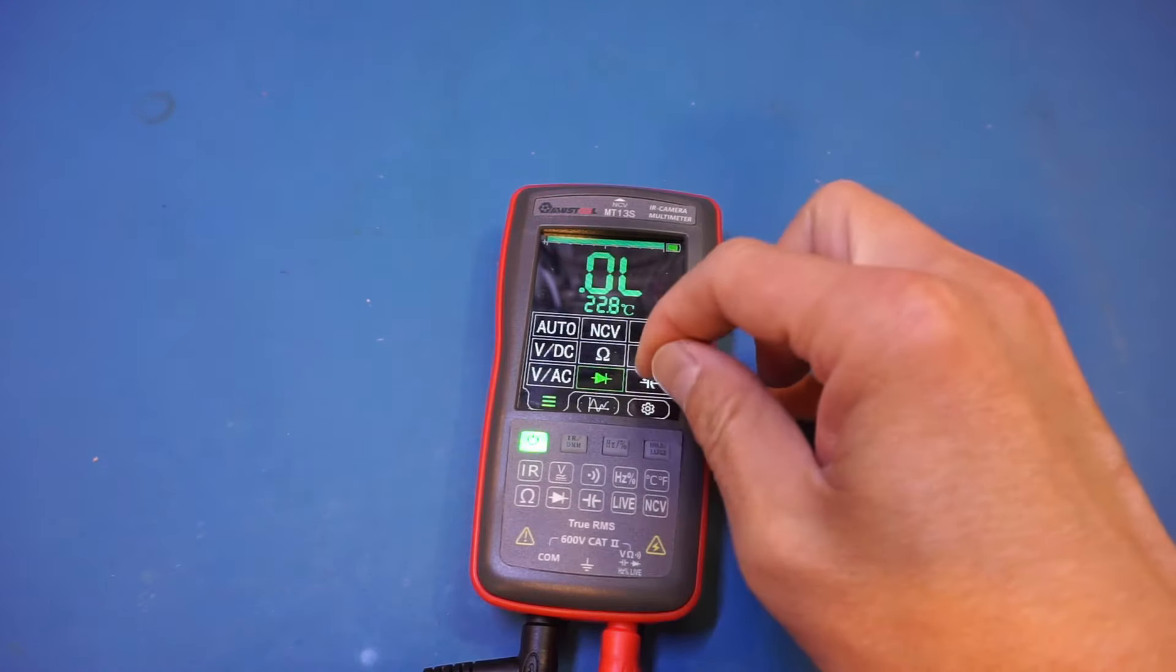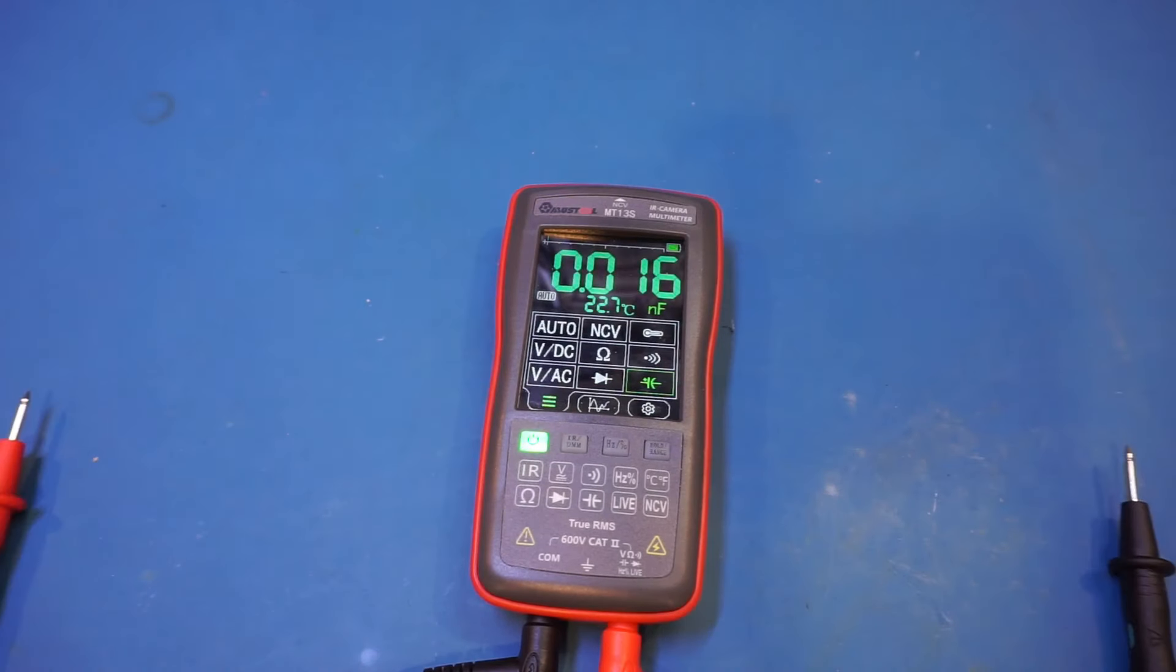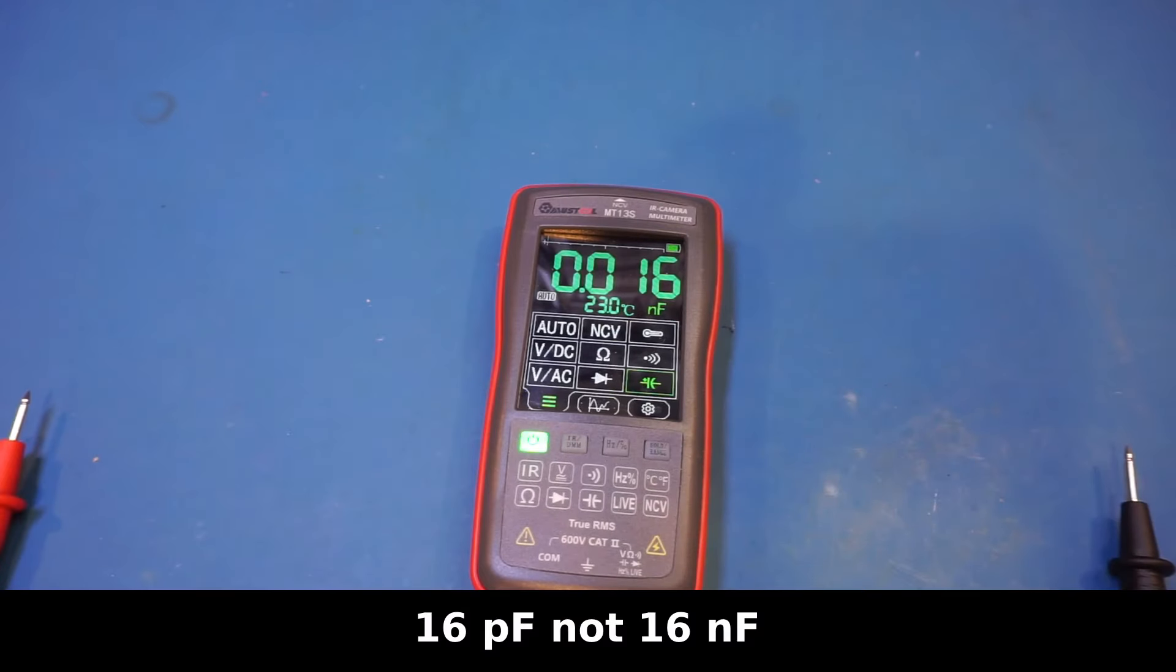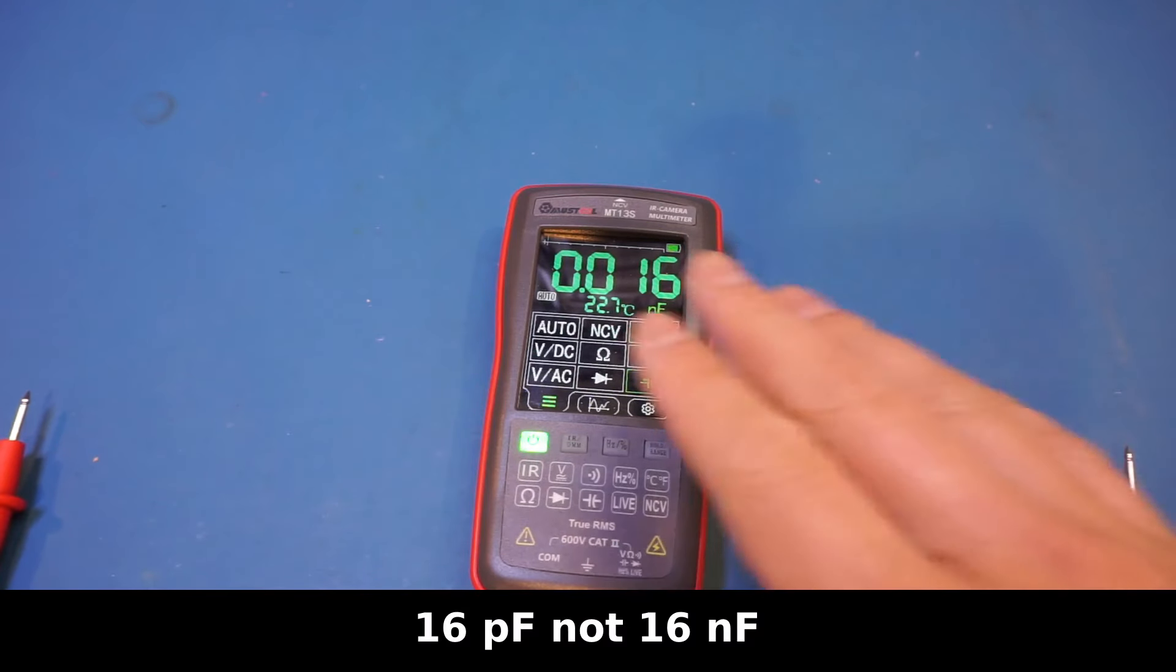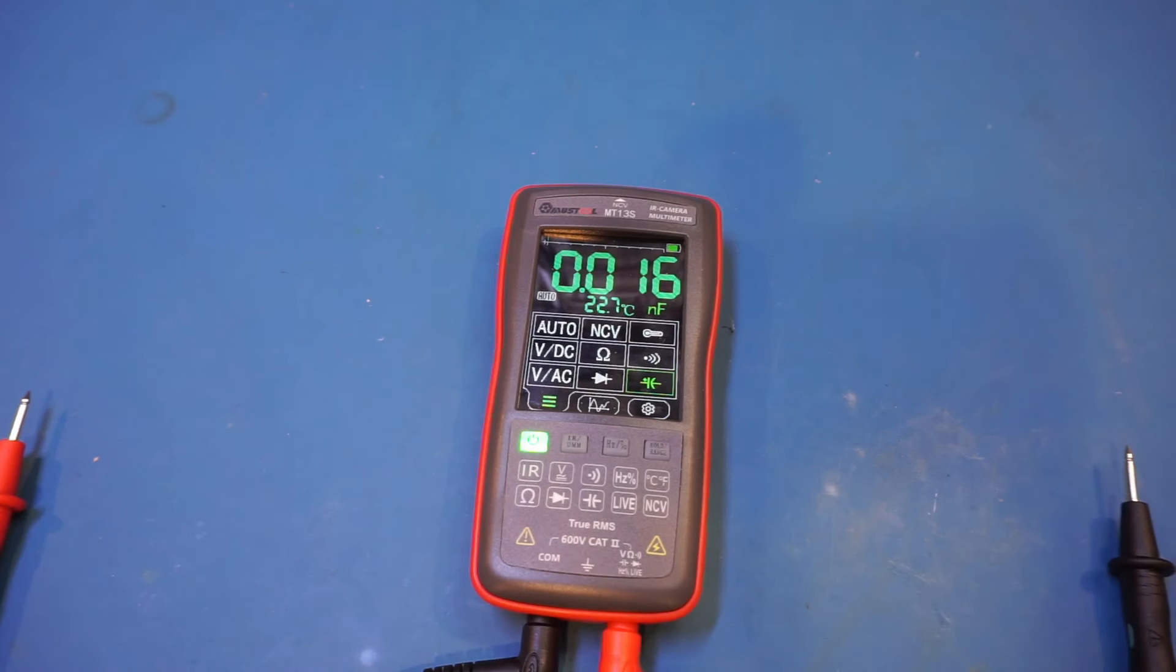All right, let's change to capacitance measurement mode. As you can see, with just the leads attached, we're already getting a 16 nF reading. And unfortunately, there's no way for you to rail out the readings. So this meter is definitely not going to be that useful for measuring small capacitance.